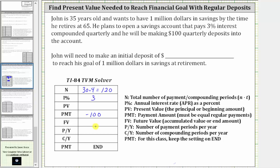The future value is the goal of $1 million. The number of payments per year and the number of compounds per year are both four, because the interest is compounded quarterly and John is making quarterly deposits. We always leave the payment option on END, not BEGIN.